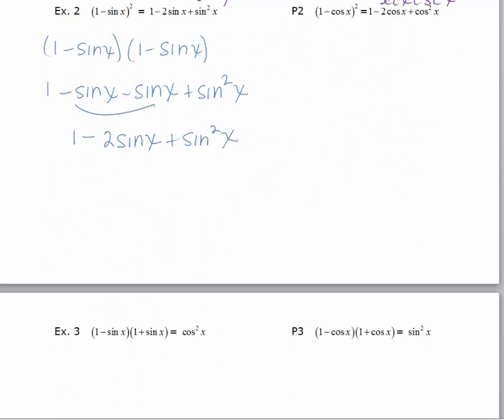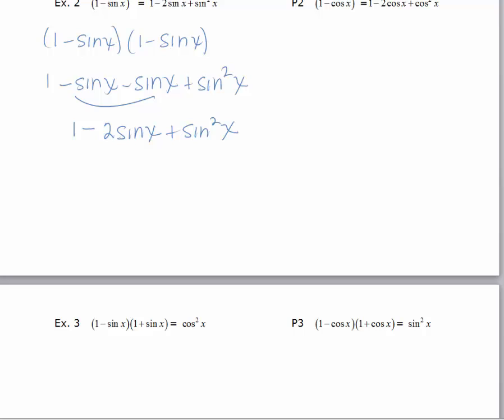Alright, let's look at practice problem two. I'm going to multiply the one minus cosine x squared out. Alright, when I multiply each expression, this expression by itself, I get one minus cosine x is the outer, minus another cosine x is the inner, plus cosine squared x, which gives me one minus two cosine x, excuse me.